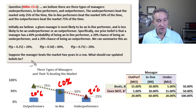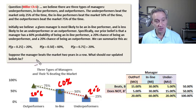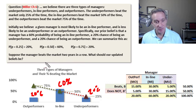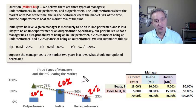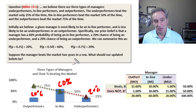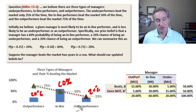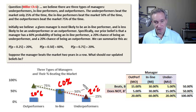Now we get to the question — the application of Bayes' theorem. Suppose we observe, as evidence, that a manager beats the market two years in a row. What should our updated belief be? Specifically, what is our updated belief — given two years of market-beating performance — that the manager is an outperformer, inline performer, or underperformer? The prior beliefs were 20%, 60%, and 20%. But how do they change given that we observe two years of outperformance as evidence?